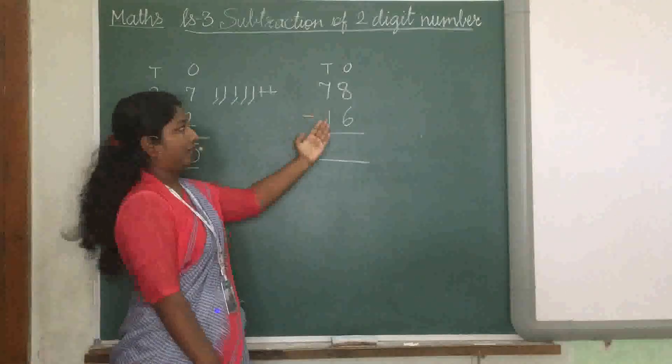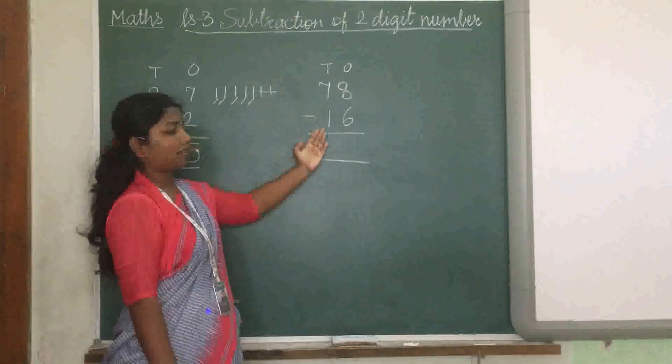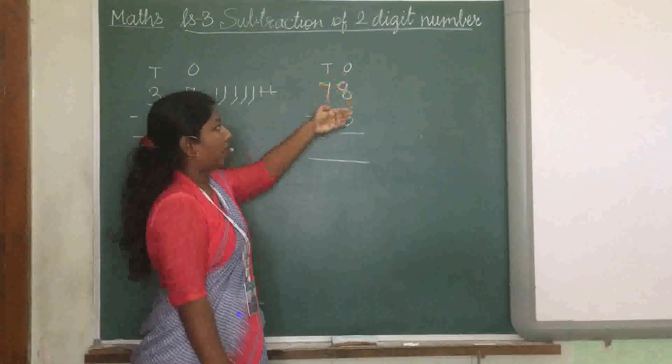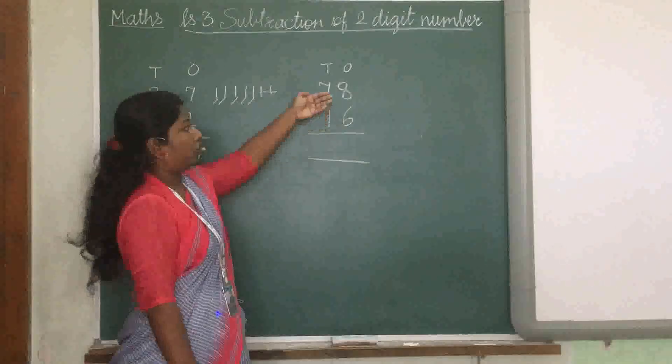Now look here. The next sum is 78 minus 16. The ones part is 8 and 6, so we have to subtract.